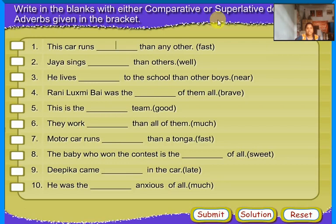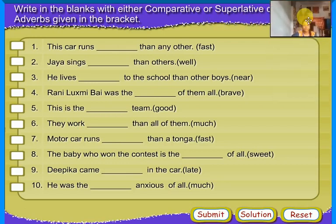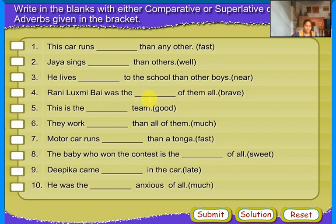Write in the blanks with either comparative or superlative degree of adverbs given in the bracket. This car runs [faster] than any other. Jaya sings [better] than others. He leaves [nearer] to the school than other boys. Rani Lakshmi Bai was the [bravest] of them all. This is the [best] team. They were [more] than all of them. Motor car runs [faster] than a tonga. The baby who won the contest is the [sweetest] of all. Deepak came [last] in the car. He was the [most] anxious of all.